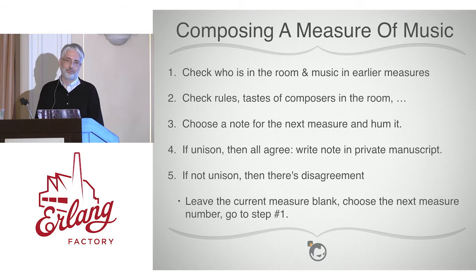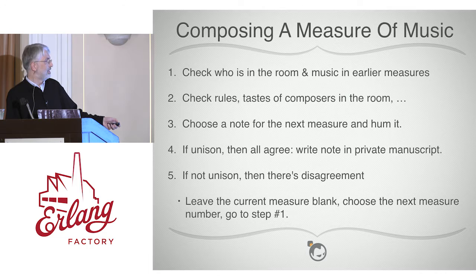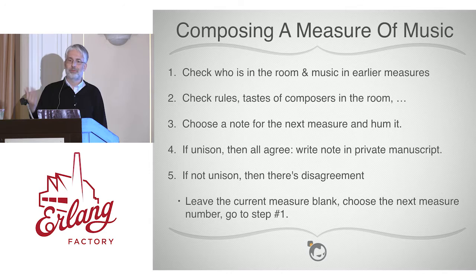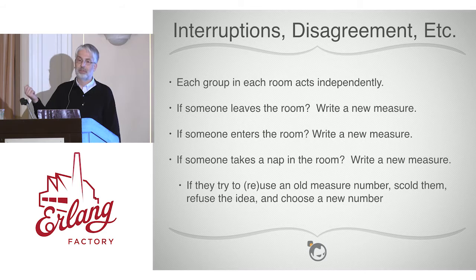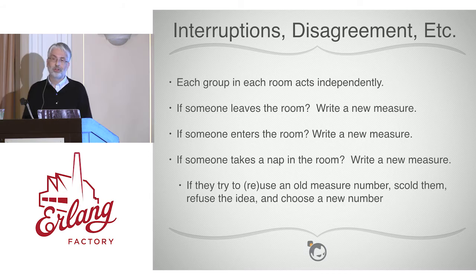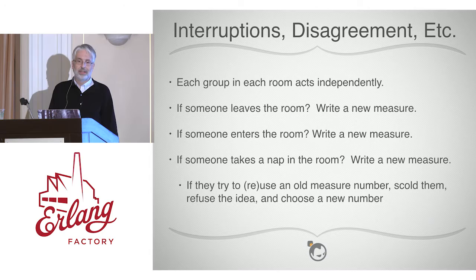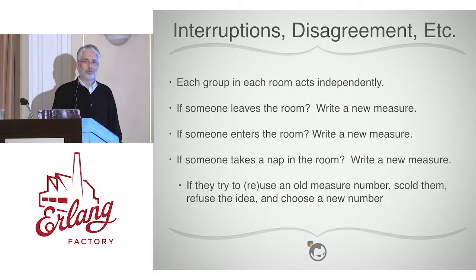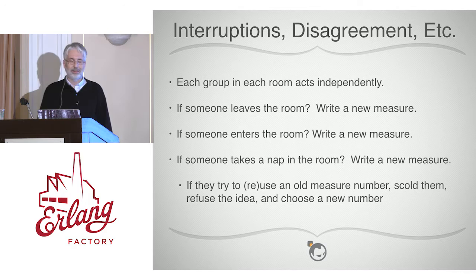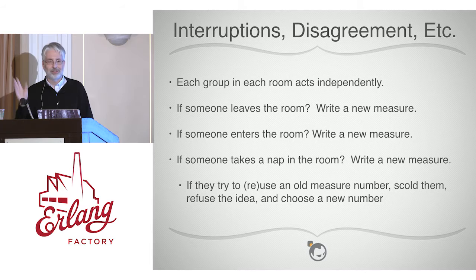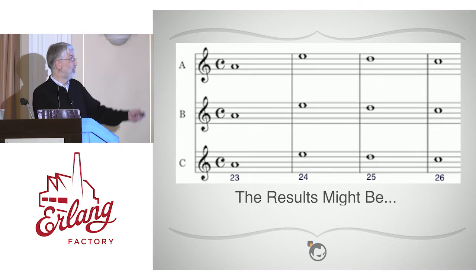Unison will probably happen fairly often because the rules are strict and options are limited. But if there's disagreement, an interruption, someone entering or leaving the room, or someone going to sleep, the response is always to write a new measure number. If someone wakes up and tries to reuse an old measure number — because manuscripts use indelible ink — they can't write in that already-written measure, and everyone scolds them to use a new measure number. You end up with music spanning measures 22 to 26, with some gaps, and that's fine.